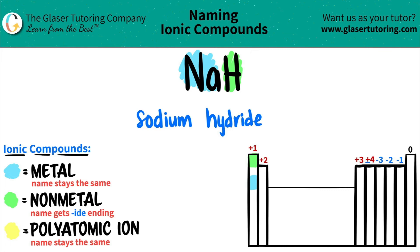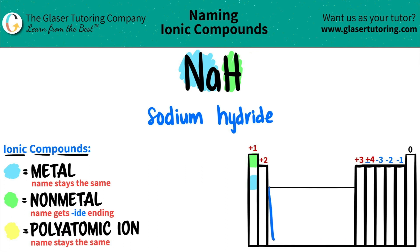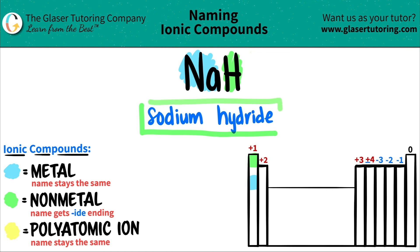Now just check: do I need a Roman numeral since this is ionic? Sodium, the metal, is not a transition metal — it's not in this block here, that's where your transition metals are. So because it's not a transition metal, you do not need a Roman numeral. And that's it — NaH is just sodium hydride.